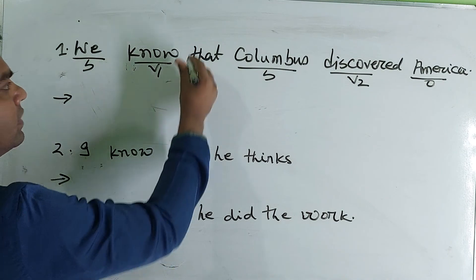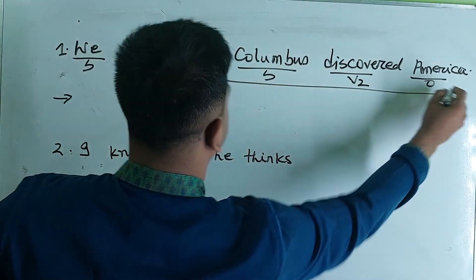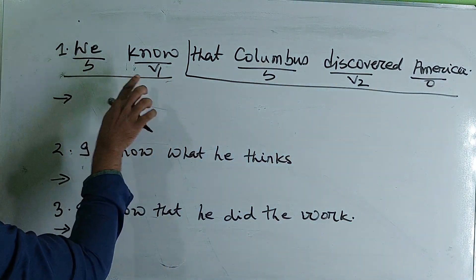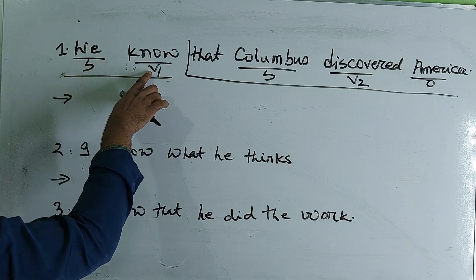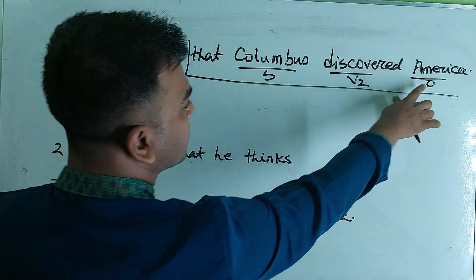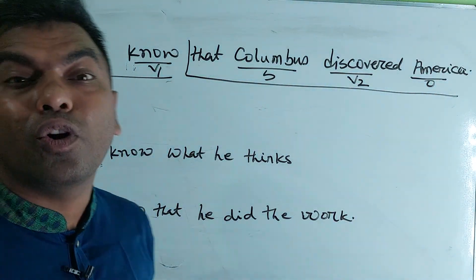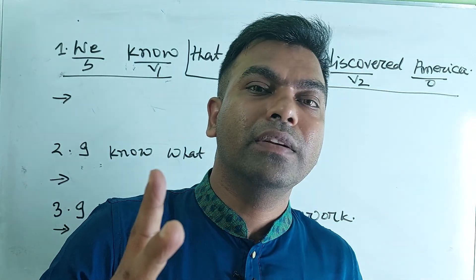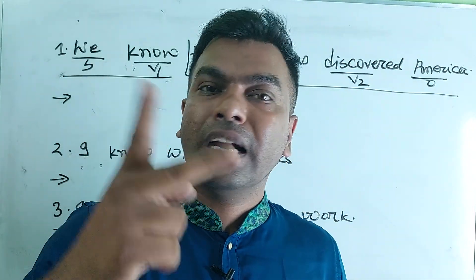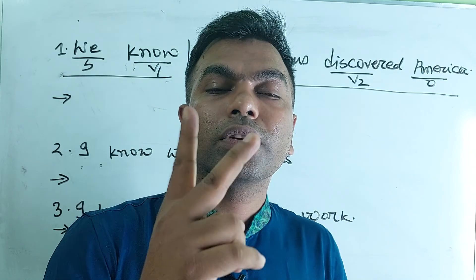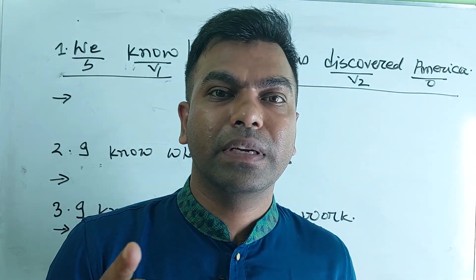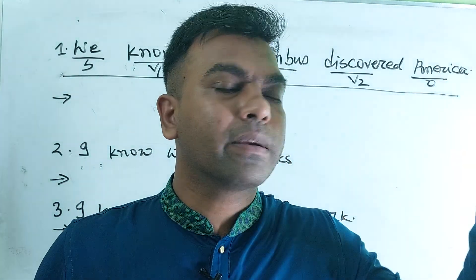This sentence is subject-verb and subject-verb-object. This sentence is a complex sentence. This means a transitive verb. Transitive means here it has an object.